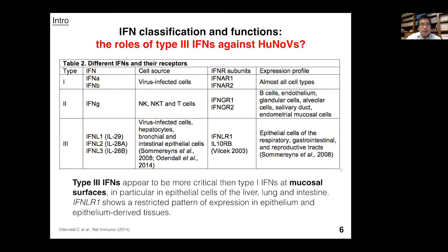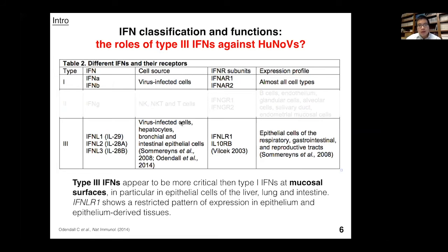Three types of interferon have been classified: type 1 (interferon alpha and beta) produced by all cell types upon viral infection; type 2 (interferon gamma) mainly produced by immune cells, which is not present in our enteroid system; and type 3 (interferon lambda), a newly discovered interferon. Unlike type 1 which is ubiquitously expressed, type 3 interferon has been found to be more dominant in mucosal layers including the respiratory tract, GI tract, and reproductive tract. We hypothesized that type 3 interferon may be more important for gastrointestinal disease like human norovirus infection.